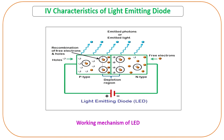In a p-n junction, the charge carrier recombination takes place when an electron crosses from the n layer to the p layer. The electrons are in the conduction band on the p-side while holes are in the valence band on the n-side. As a result, the conduction band has a higher energy level compared to the valence band. When an electron recombines with a hole, the difference in energy is given out in the form of heat or light.